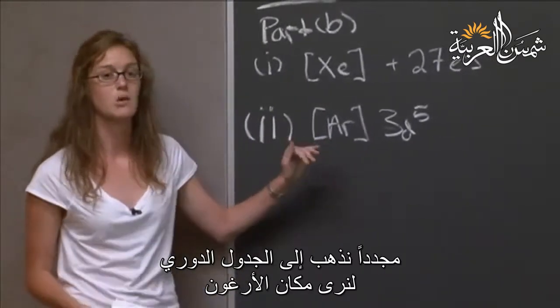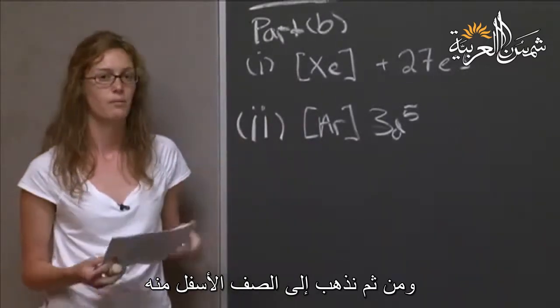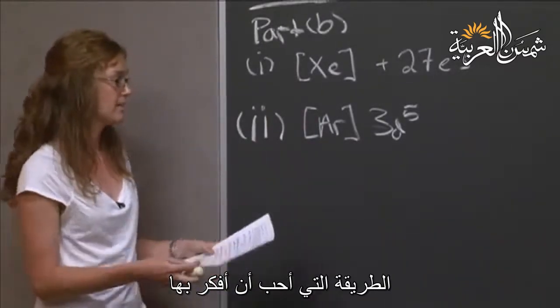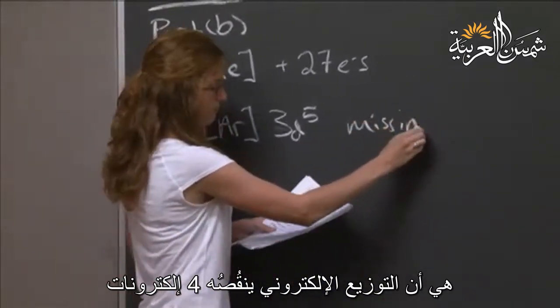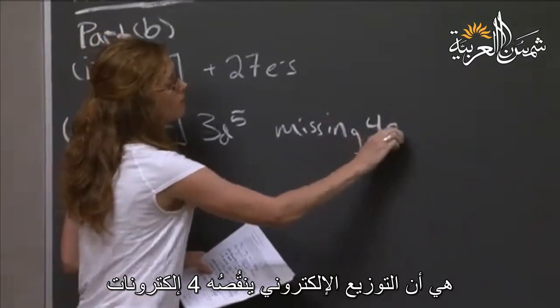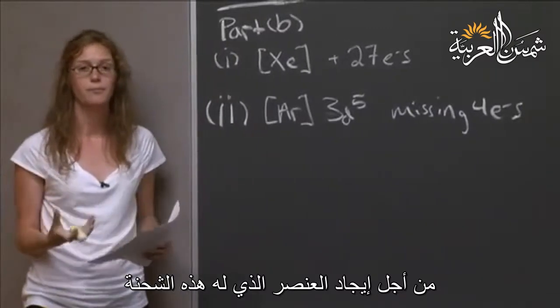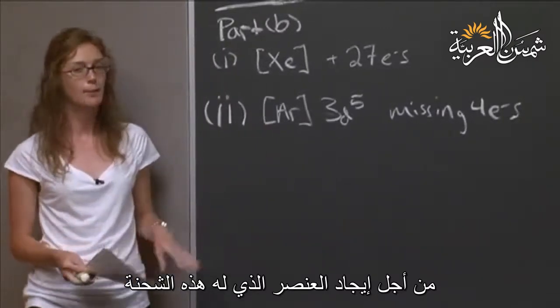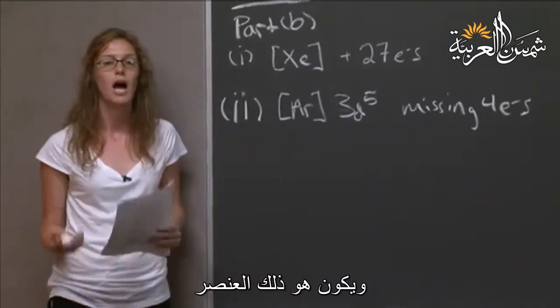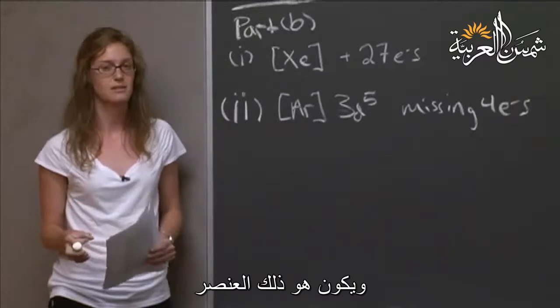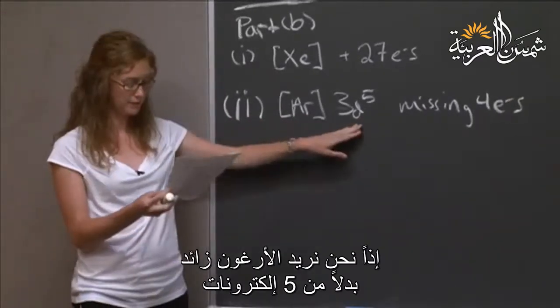We go to the periodic table and see where argon is, and then we go to the next row. The way I like to think about this is, this is the electron configuration missing four electrons. To find the element that has this charge, I'm just going to add back in the electrons, go to that position in the periodic table, and that is my elemental species. We want argon plus, instead of 5 electrons, and the problem says this is a 3d5.